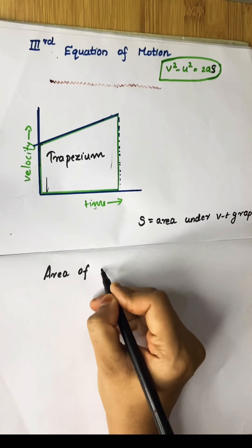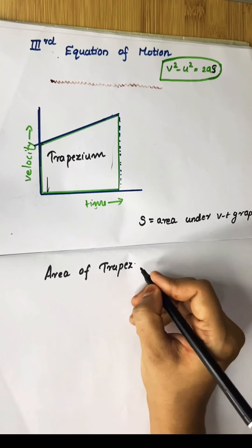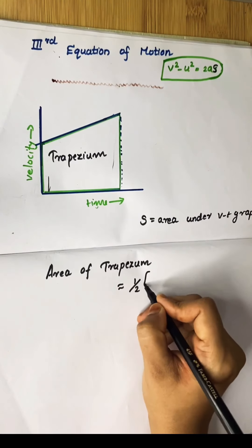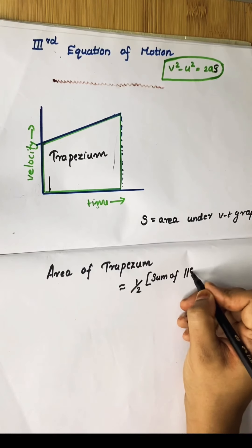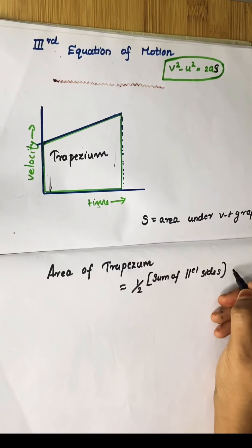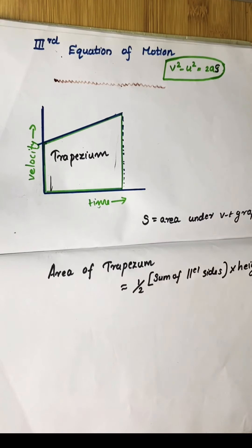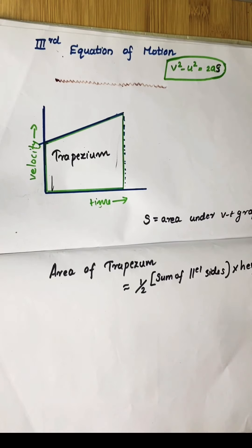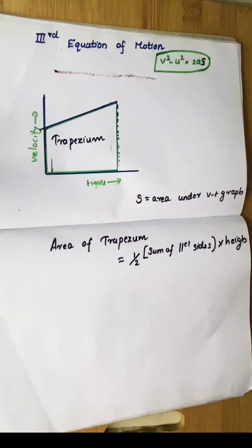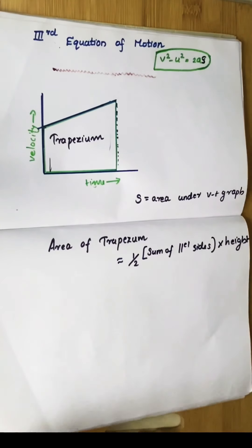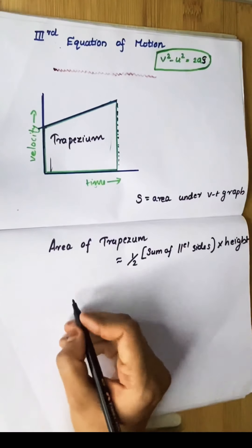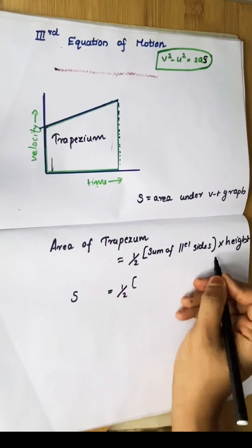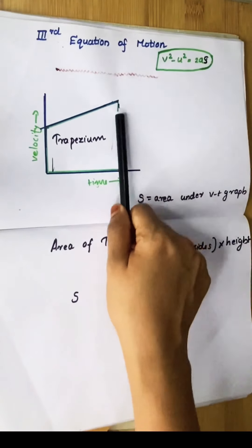We want to find out the area of a trapezium. Do you know the formula? It is: area of trapezium equals half into sum of parallel sides into height. Applying this, s equals half into the sum of the parallel sides.